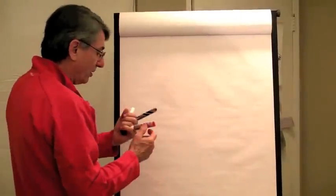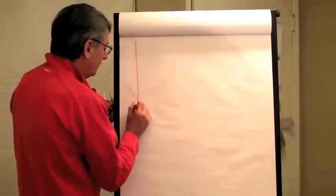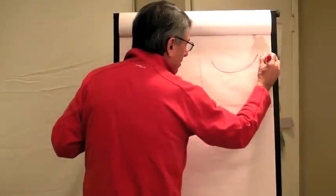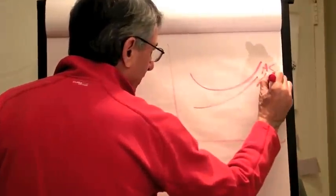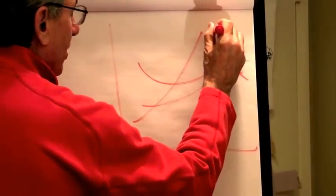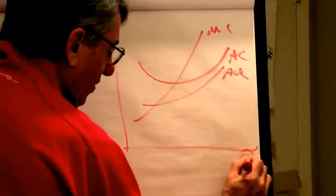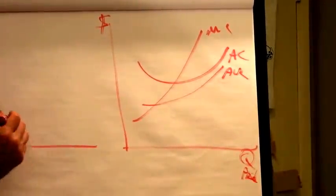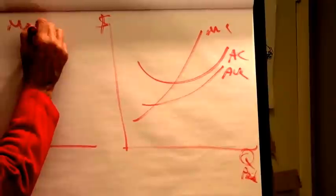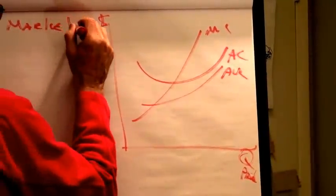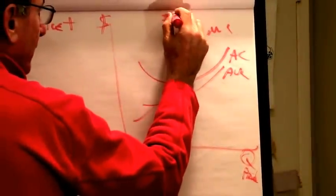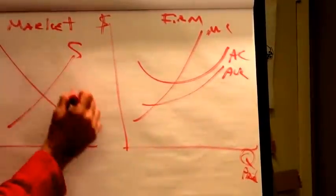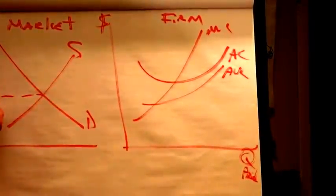There are two more scenarios to deal with here. If this is the firm's average cost curve, that's the average variable cost, and that's marginal cost. These are dollars on the vertical axis and quantity produced on the horizontal. This is the market and this is a firm's cost. We go over here to the market — there's supply, there's demand, and this is the price P2.